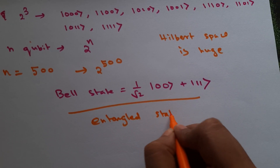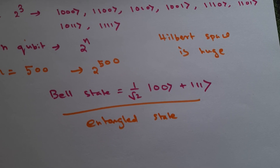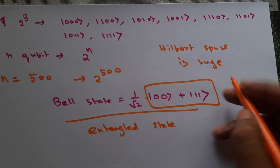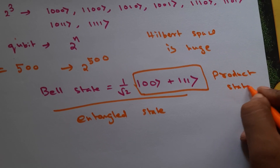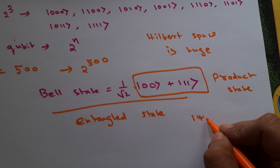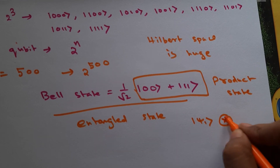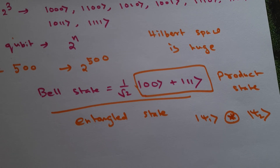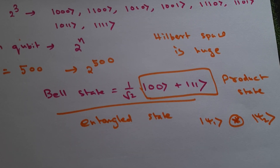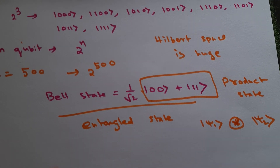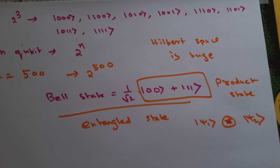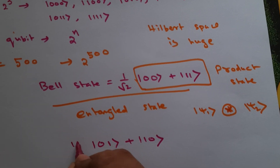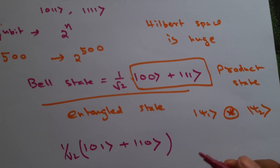The Bell state is an entangled state. It is entangled because you cannot write it as a product state of the form |ψ₁⟩|ψ₂⟩. Other entangled states are also possible — for example, (1/√2)(|01⟩ + |10⟩) can also be a valid entangled state.